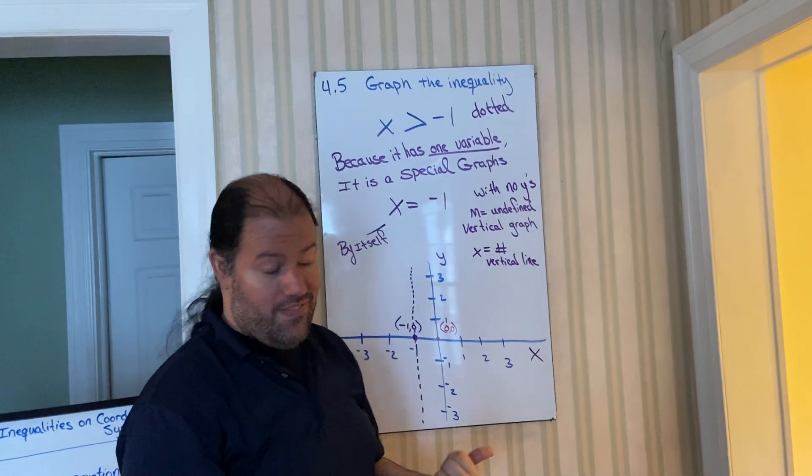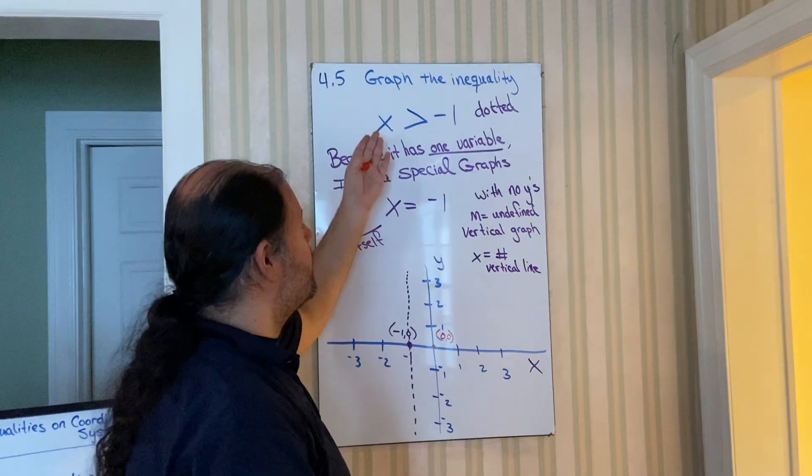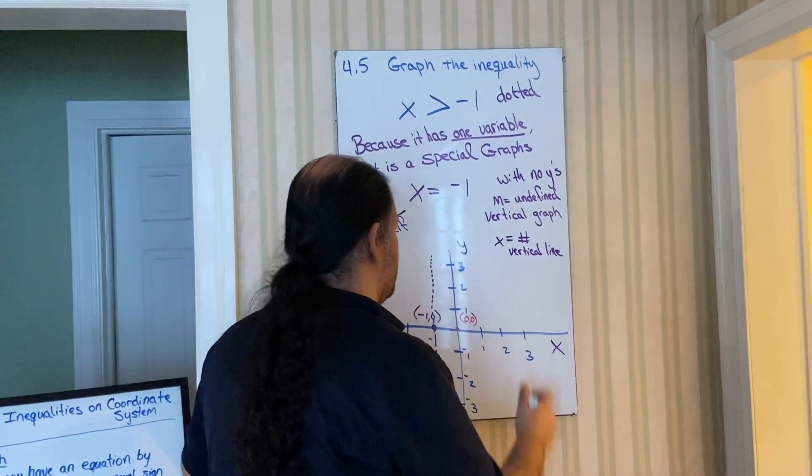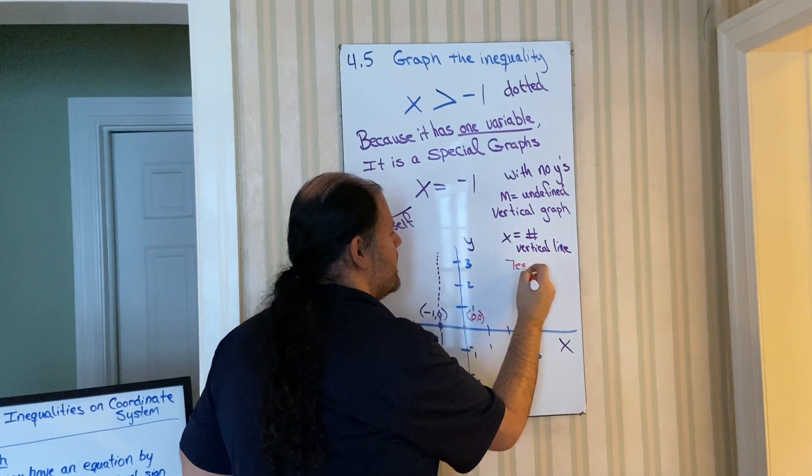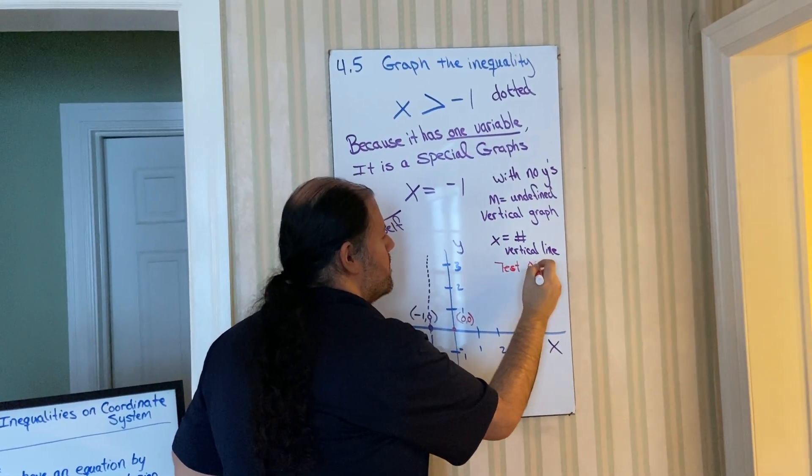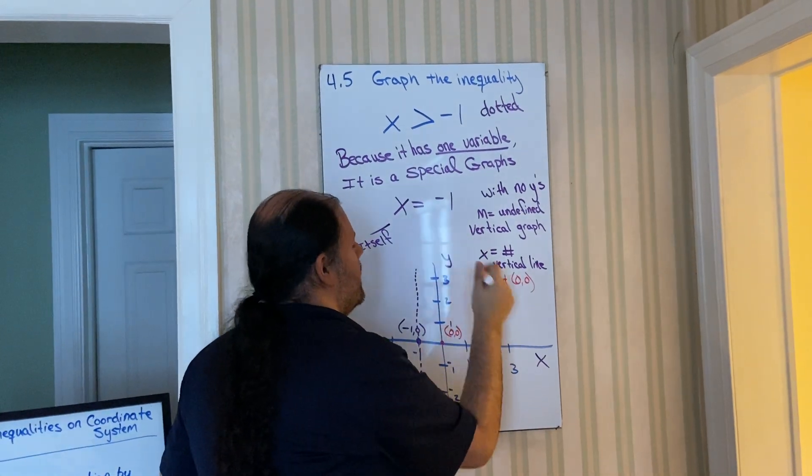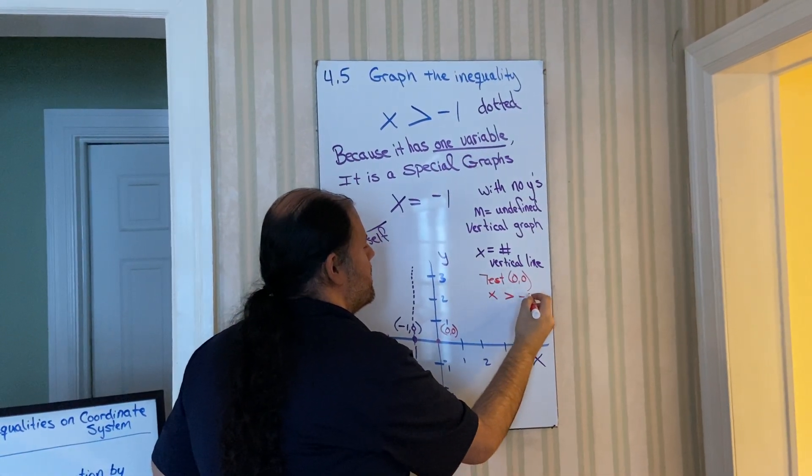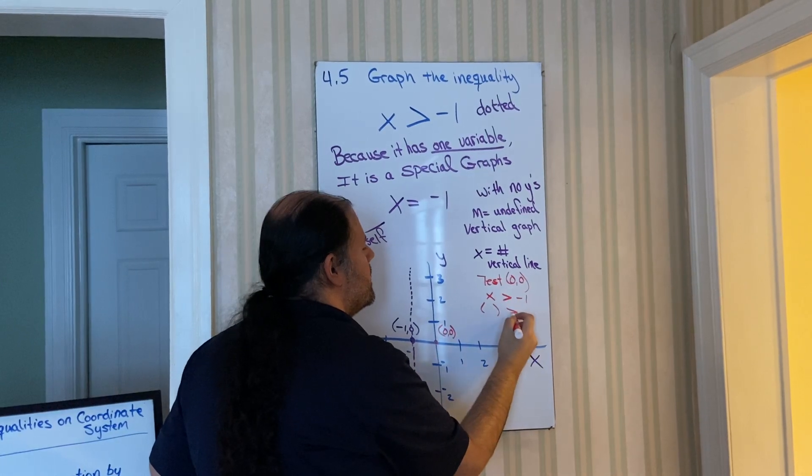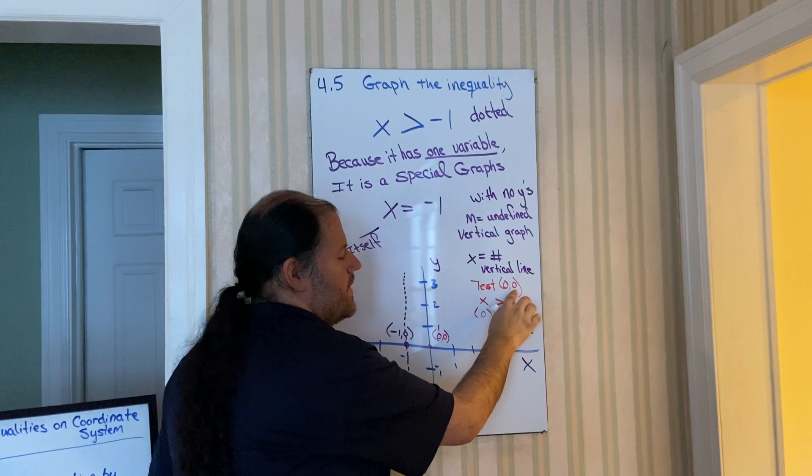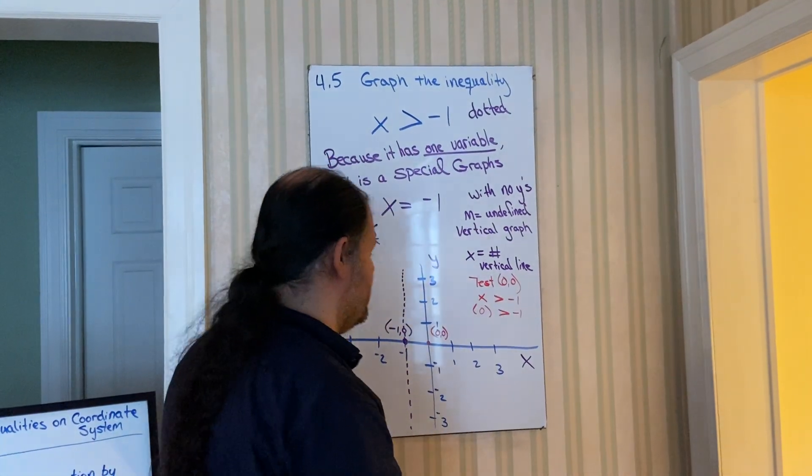Take zero, zero. Plug it into the original problem, not the equal. So we're going to test zero, zero, because it's not on the purple boundary line. Every time I see x, put in a set of parentheses, plug in that x is zero. Notice we don't have any y, so we can't plug in a second set of parentheses, just the one.